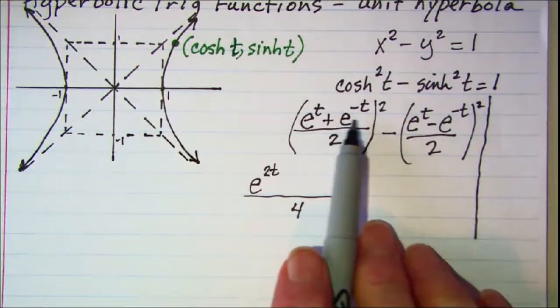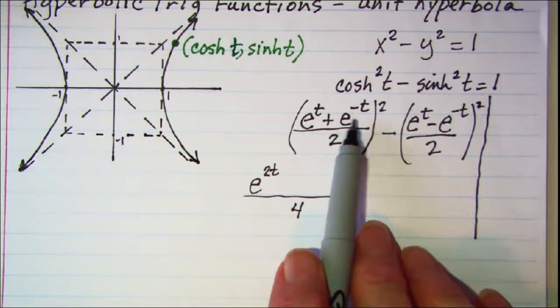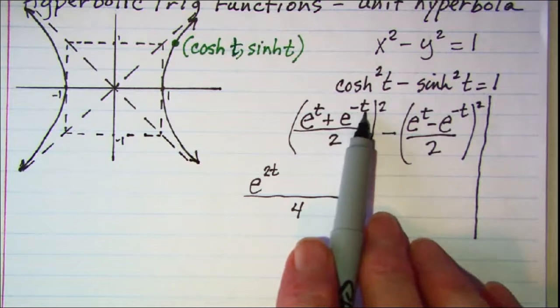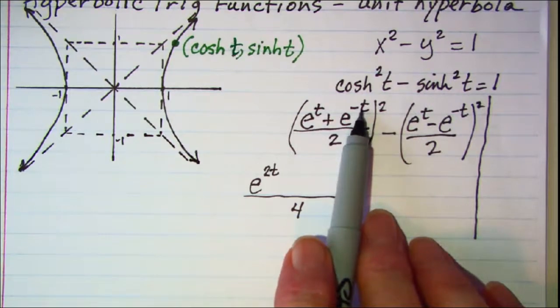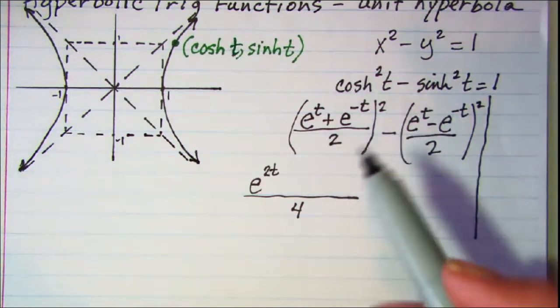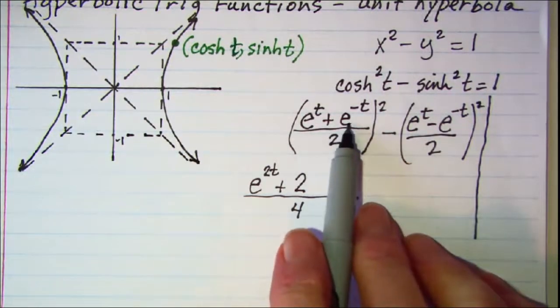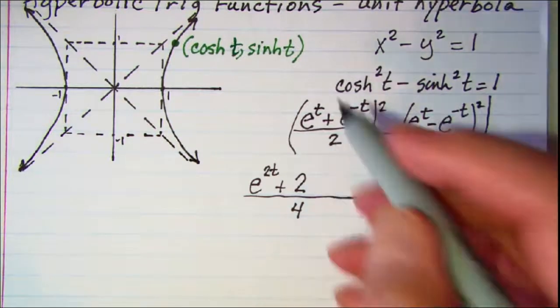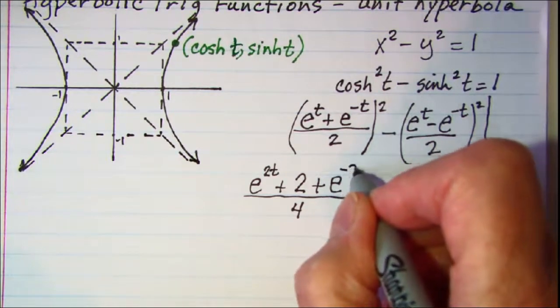Then I take the first and second terms multiply those and then double that product. When I multiply e to the t times e to the negative t I get e to the zero because remember you add your exponents. And that's just 1. Then when I double that I get 2 as my middle term. And then square the last term that will give me e to the negative 2t.